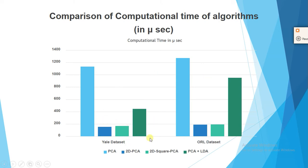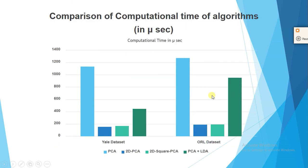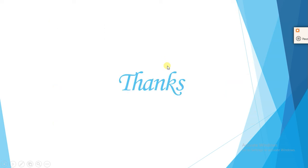In my view, PCA plus RDA shows the best accuracy among the four algorithms, and the ORL dataset shows better accuracy than Yale. That's all for this video — thank you for watching. I hope you liked the coverage of all the algorithms. Please like the video and subscribe to the channel. Thank you very much.